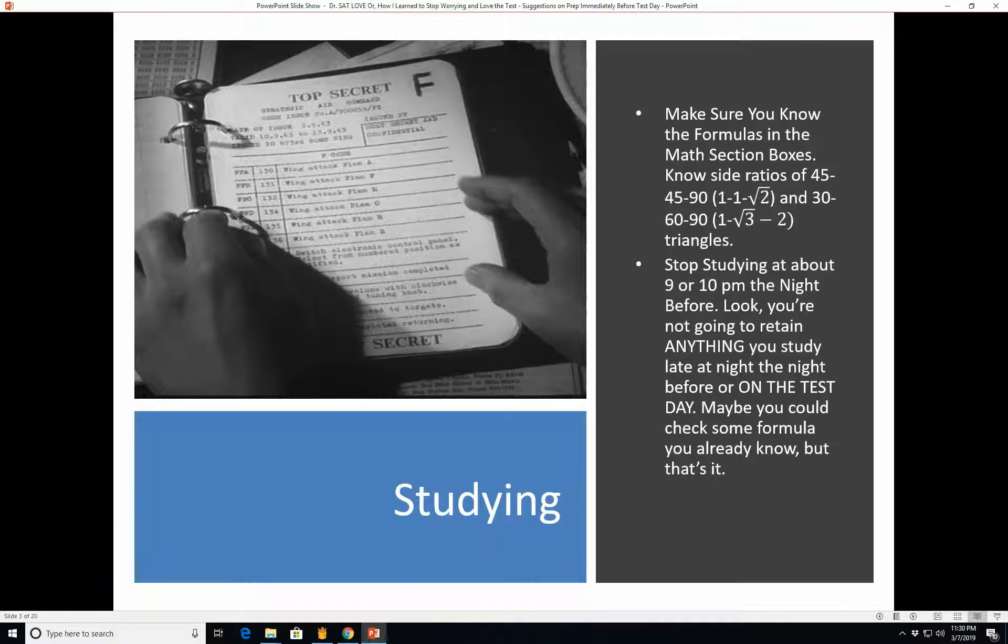First, studying. Make sure you know the formulas in the math section boxes at the beginning of each math section on the SAT. You can find it on any practice SAT that you've done or that you can find online. Stop studying at about 9 or 10 p.m. the night before. Look, you're not going to retain anything you study late at night before the test or on the test day, and not to mention you'll be tired and burnt out. Just stop at about 9 or 10 p.m. and then go to bed. Maybe you could check some formulas that you already know, but that's about it. Really, you don't want to do any heavy-duty studying. You're not going to learn anything particularly new after about 9 or 10 p.m. the night.